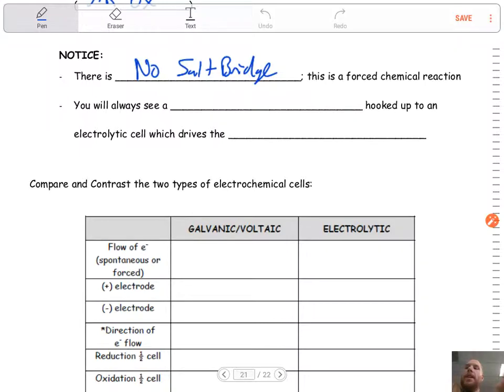You will always, always, always see a power source. And that is a, I think it was, if I remember correctly, last year's Regents exam, this was a question. What's the big difference between electrolytic cell and voltaic cell? Power source, guys, a battery.